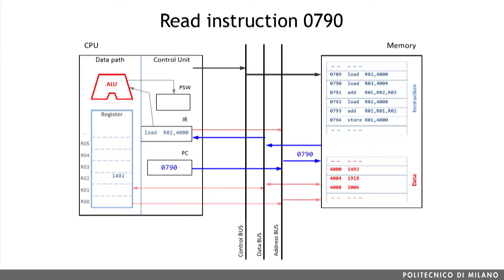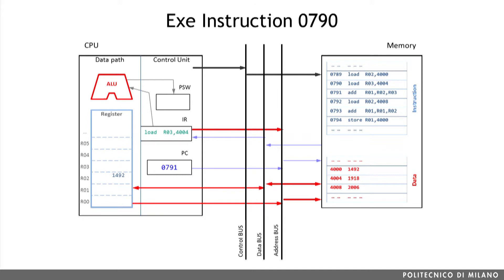We are accessing the memory at the address stored in the program counter, which is 0790. The control unit is sending a read command on the control bus to load the necessary information from the memory to the latch register. Because of this, we now have the new instruction stored in the instruction register. Meanwhile, we update the value stored in the program counter to point to the next instruction to be executed. Instruction 0790 is again a load, meaning we are experiencing the same set of operations on different addresses and values with respect to the previous one.